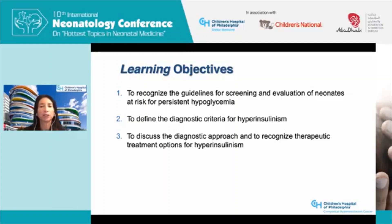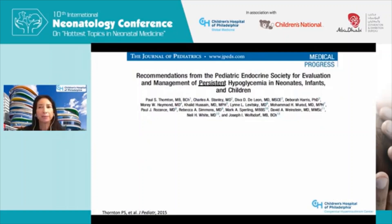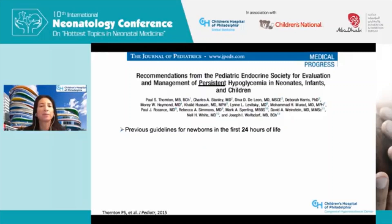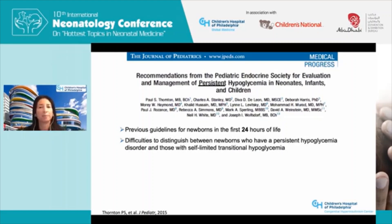In 2015, the Pediatric Endocrine Society convened a panel of experts in hypoglycemia to formulate recommendations for the evaluation and management of persistent hypoglycemia in neonates, infants, and children. This was particularly important because up to this point, all previous guidelines had referred to only the first 24 hours of life, and there were difficulties distinguishing between newborns with persistent hypoglycemia disorders and those with self-limited transitional hypoglycemia.